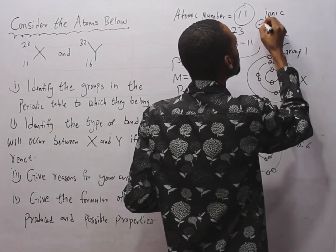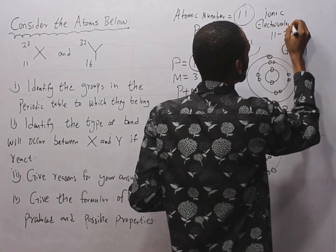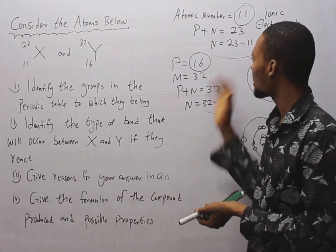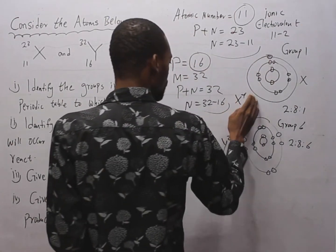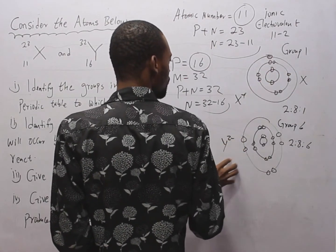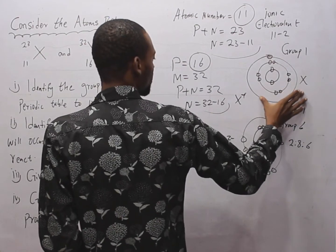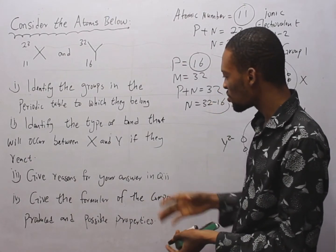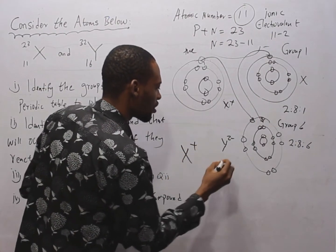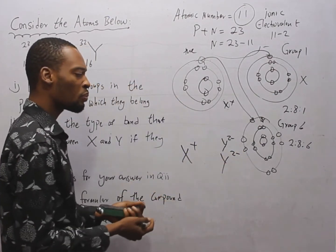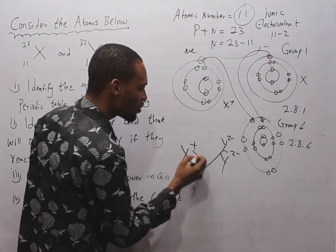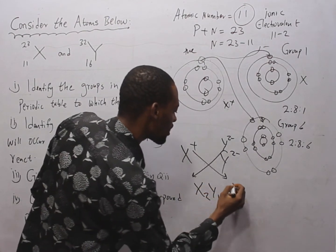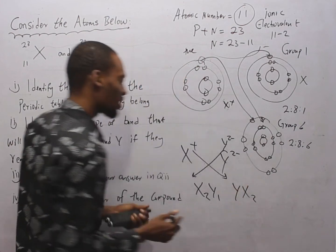The bond is ionic or electrovalent. The reason: Y needs two electrons but S has only one in its outermost shell; therefore two atoms of S are needed to donate one electron each to one atom of Y. This gives us S⁺ ions and Y²⁻ ions, which combine to form S₂Y — written as YS₂ — as the compound formed.